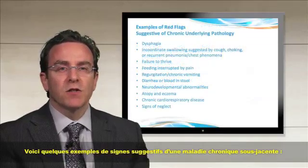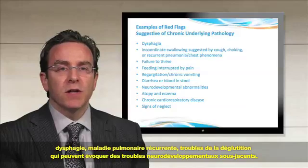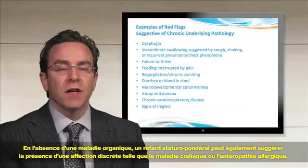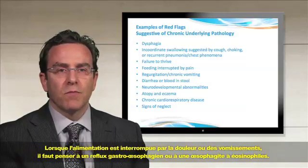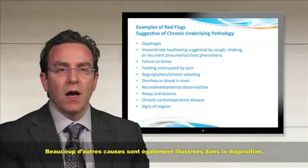Examples of red flags suggestive of chronic underlying pathology include dysphagia, recurrent chest disease, or swallowing disorders that may be suggestive of underlying neurodevelopmental disorders. Failure to thrive, which can occur in the absence of organic disease, may also be suggestive of subtle conditions such as celiac disease or renal tubular acidosis. Feeding interrupted by pain or vomiting may be suggestive of GERD or eosinophilic esophagitis, and there are a myriad of other causes demonstrated on this slide.